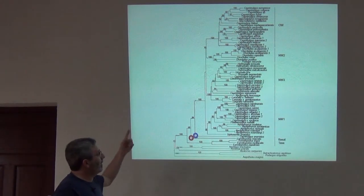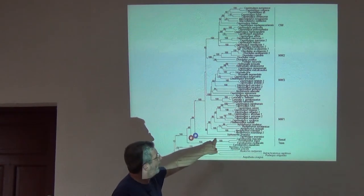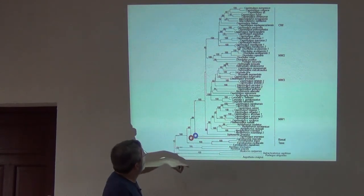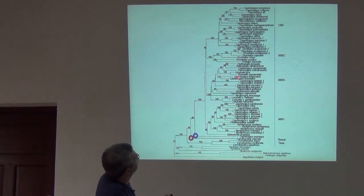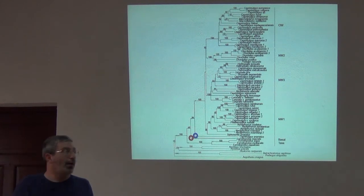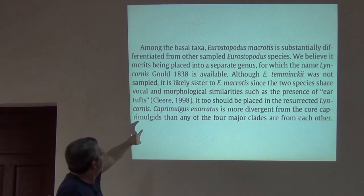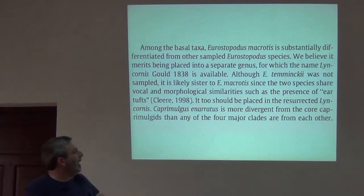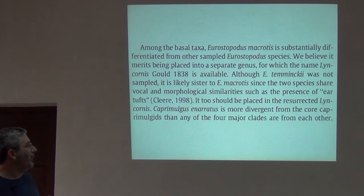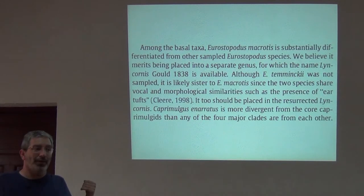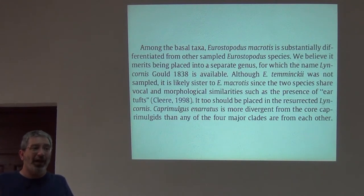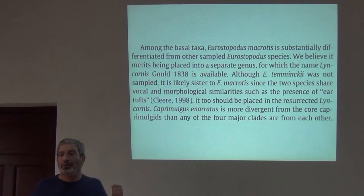The other point they make is about Caprimulgus eneratus, marked in blue, which falls basal to the big clade. Notice Caprimulgus appears here and there throughout all these clades, and then eneratus falls outside that big group. Caprimulgus eneratus is more divergent from the core caprimulgids than any of the four major clades are from each other. The type species of the genus Caprimulgus is not eneratus, and there was no generic name available for eneratus — so they will describe a new genus.